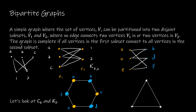If we try the same thing for K3, labeling the vertices A, B, C: starting at A with yellow, B gets blue — but C is connected to both a yellow and a blue vertex, so it needs a third color. Since K3 requires three colors, it cannot be a bipartite graph, because 'bi' means two.